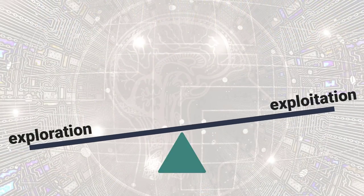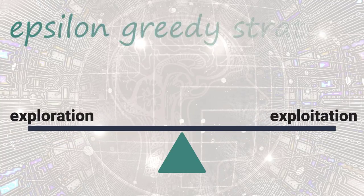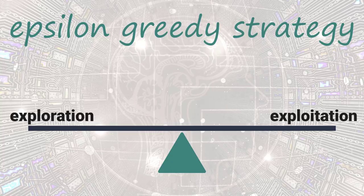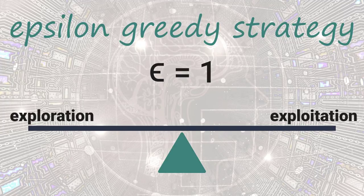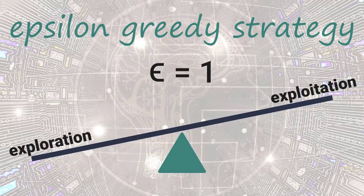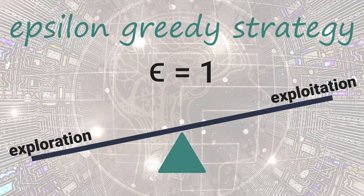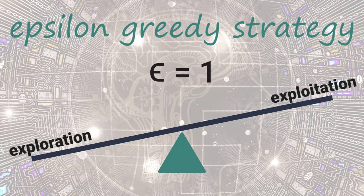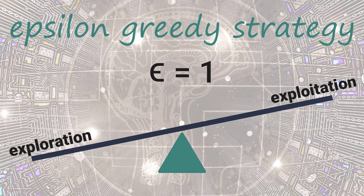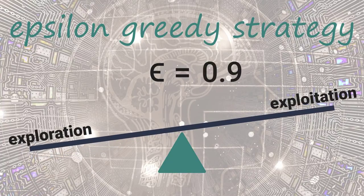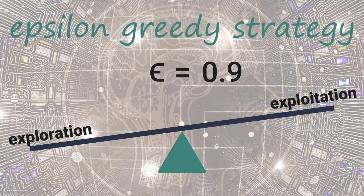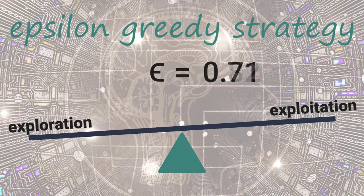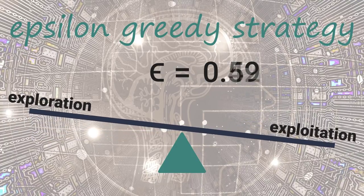To get the balance between exploitation and exploration, we use what's called an Epsilon Greedy strategy. With this strategy, we define an exploration rate epsilon that we initially set to 1. This exploration rate is the probability that our agent will explore the environment rather than exploit it. With epsilon equal to 1, it's 100% certain that the agent will start out by exploring the environment. As the agent learns more about the environment, at the start of each new episode, epsilon will decay by some rate that we set so that the likelihood of exploration becomes less and less probable. The agent will become greedy in terms of exploiting the environment once it's had the opportunity to explore and learn more about it.